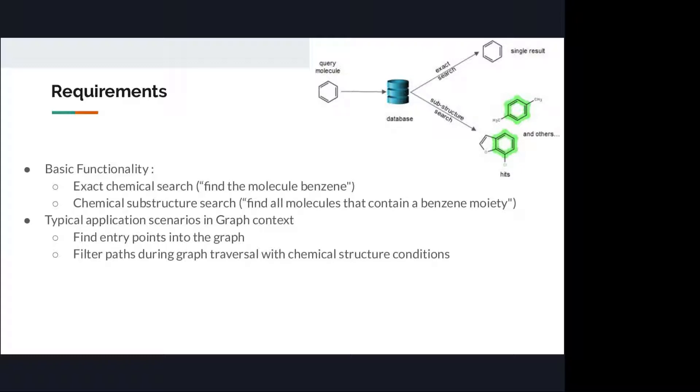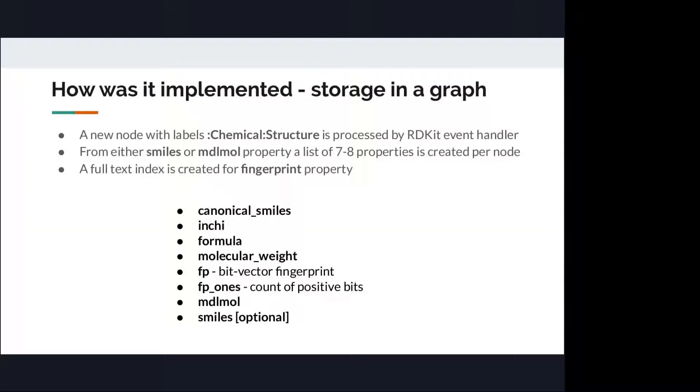The requirements of this project is to implement functionality for exact search. Find me a molecule benzene, for example. And a chemical substructure search. Find me all candidates that contain benzene ring. In terms of graph, it can be used as an entry point into a graph. And a substructure search can be a condition for graph traversal. It will filter our paths.